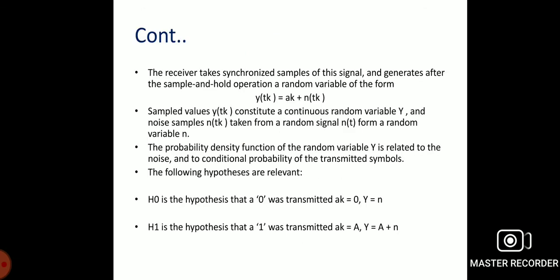The receiver takes synchronized samples of the signal and generates, after the sample-and-hold operation, a random variable of the form y(t_k) = α_k + n(t_k). The sampled values y(t_k) constitute a random variable Y, and noise samples n(t_k) are taken from a random signal n(t) as a random variable.